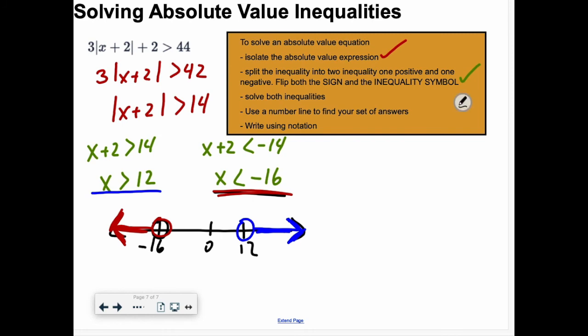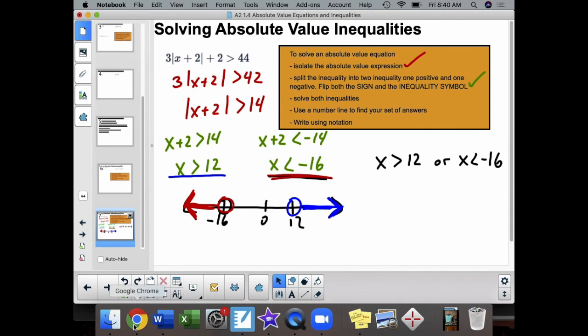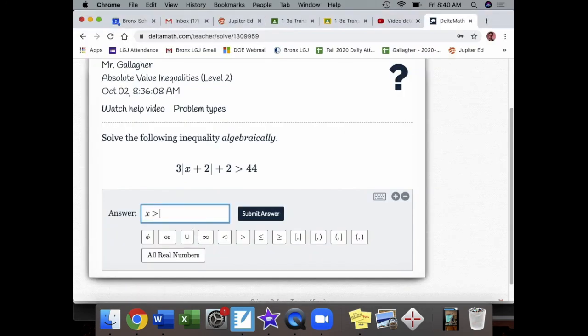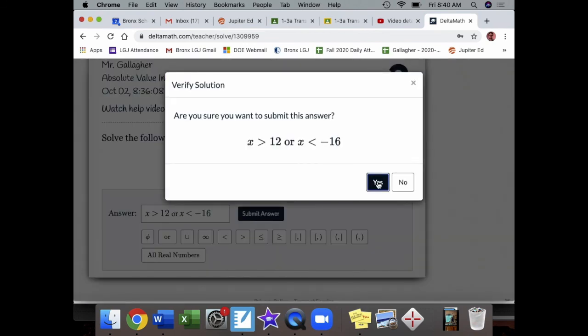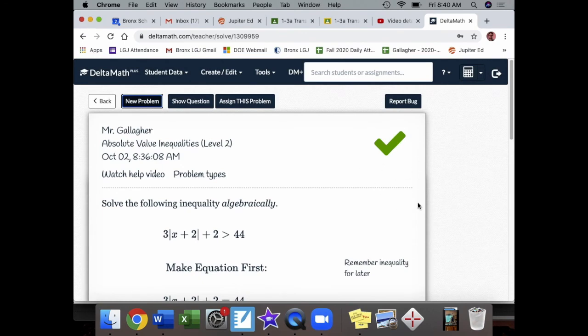So all you're going to do to write your answer is this is what you plug into delta math. And here's what it'll look like. You got to hit this little or. x less than negative 16 or x greater than 12. Submit the answer. Yes. And we got it right.